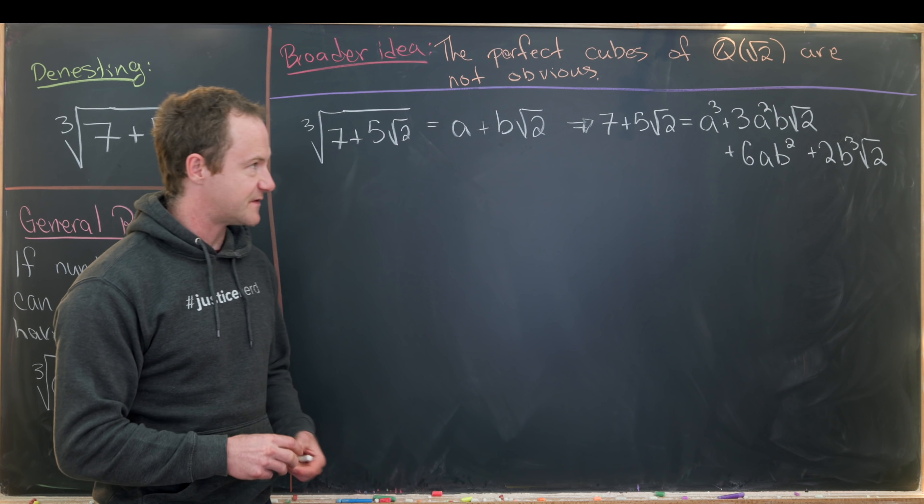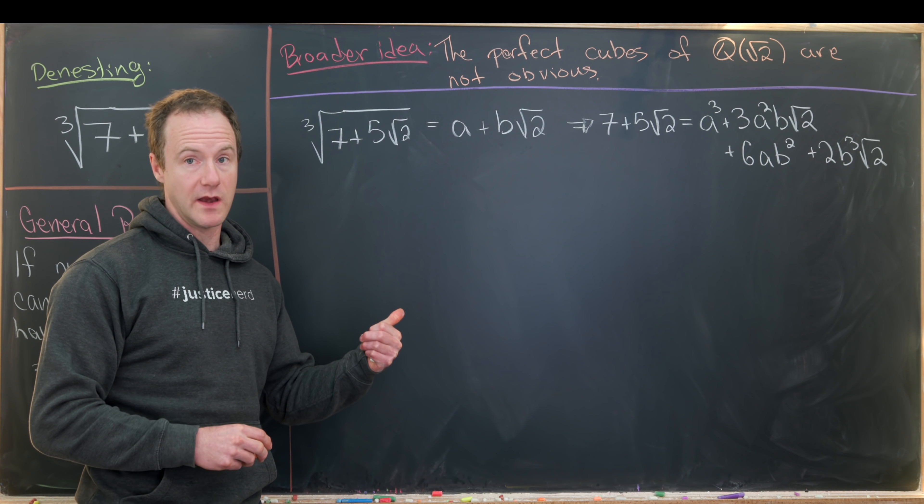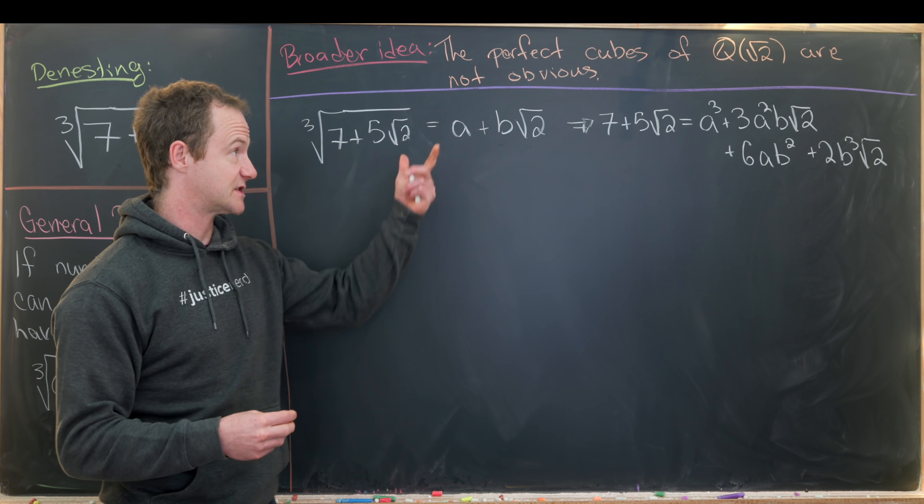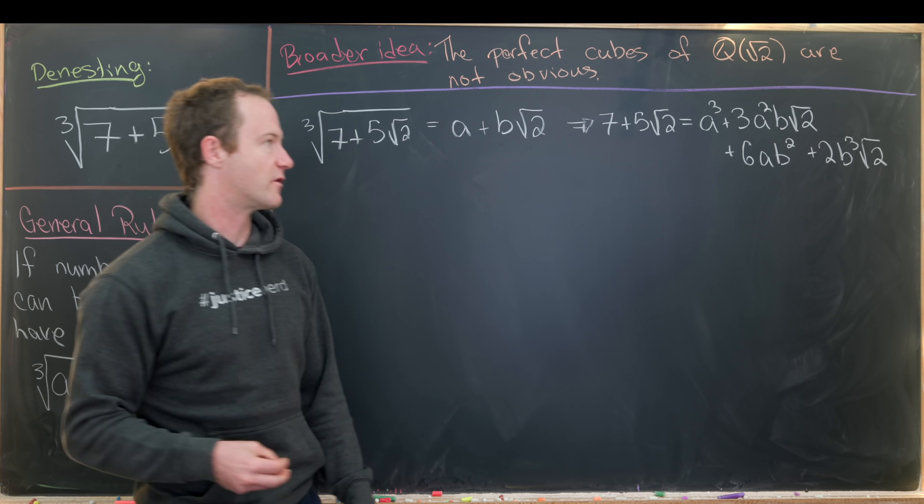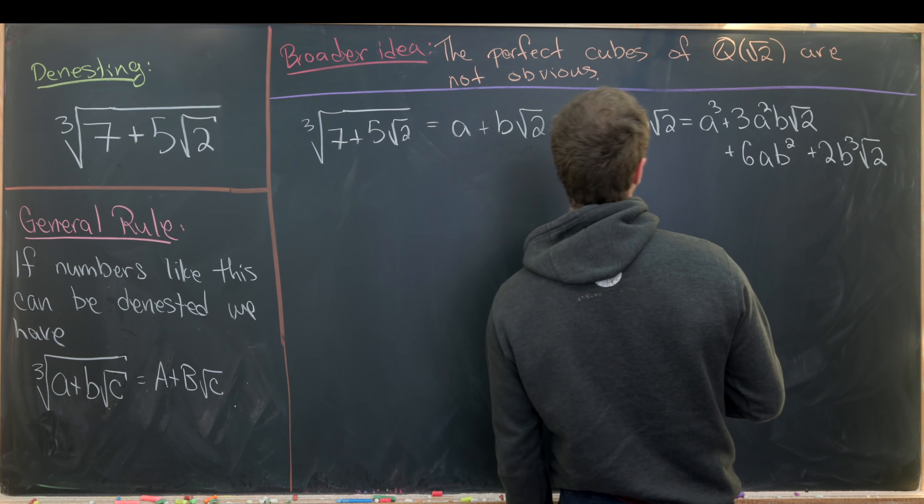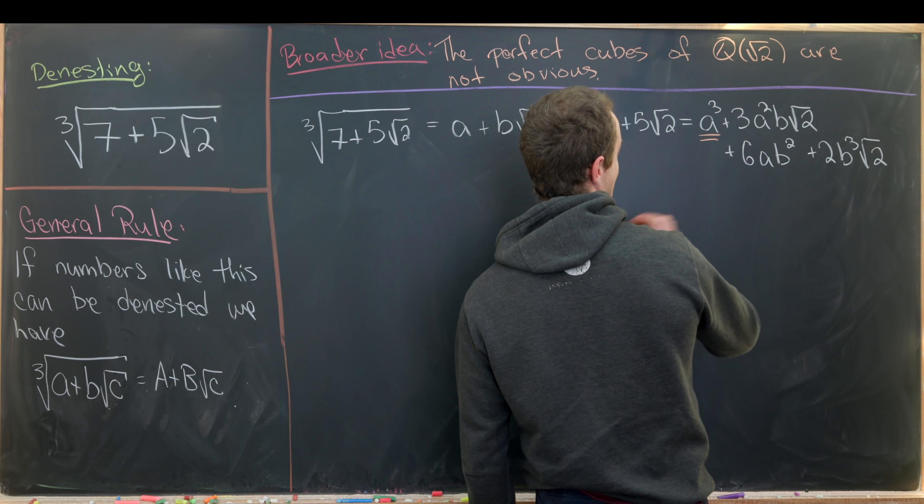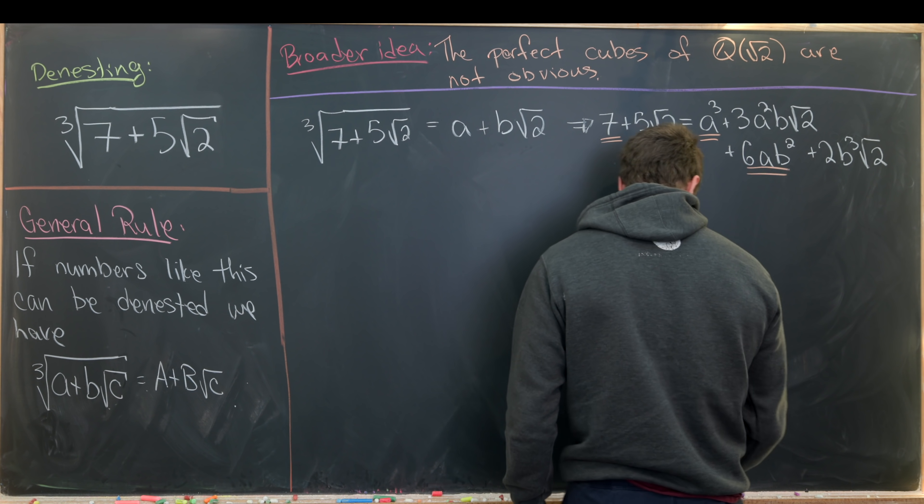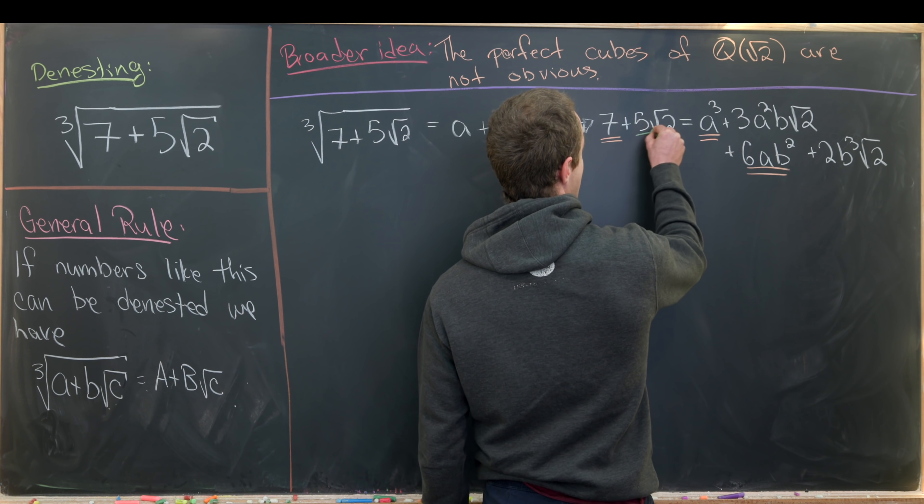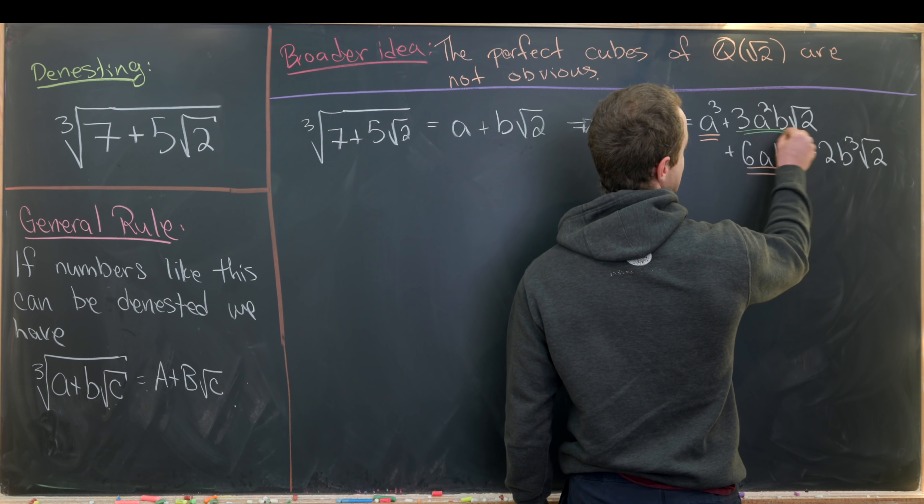Now next we're going to use the fact that the number one and the square root of two form a basis for Q adjoined root two over the rational numbers. That means we can equate the just plain numbers the rational numbers on each side of this equation as well as the coefficients of the square root of two.